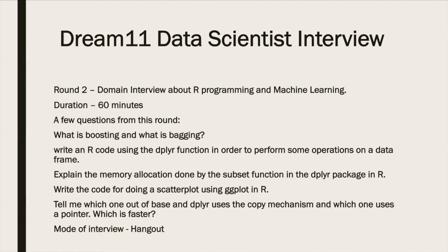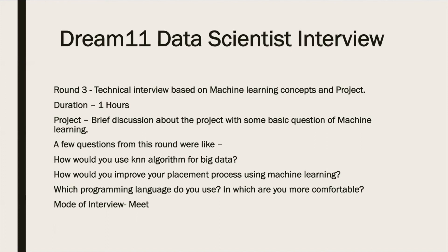After clearing this round, there was the technical interview round. Most questions were based on machine learning concepts and projects mentioned in the resume. The duration was around one hour. There was a brief discussion about projects — for example, NLP and CNN models were mentioned, so they asked basic definitions related to NLP and CNN. After the project discussion, they asked more machine learning questions, such as: how would you use the KNN algorithm for big data? Or, how would you improve a placement process using machine learning? Some questions were really quite good. The difficulty level was medium, the mode was Google Meet, and they wanted to check thinking and application skills.